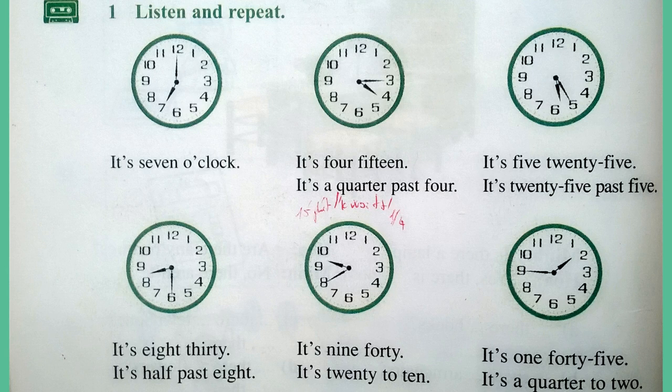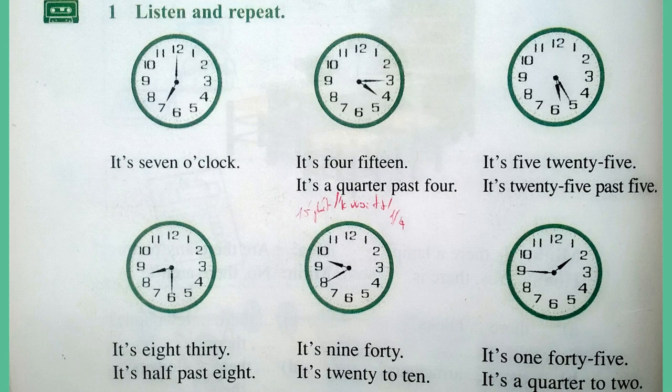It's 7 o'clock. It's 4.15 — it's quarter past four. It's 5.25 — it's 25 past five. It's 8.30 — it's half past eight. It's 9.40 — it's 20 to 10. It's 1.45 — it's quarter to two.